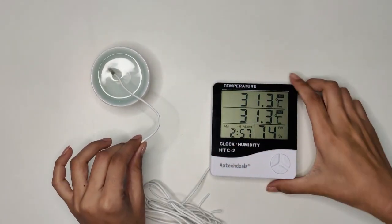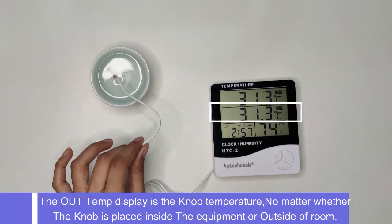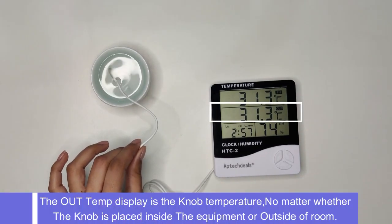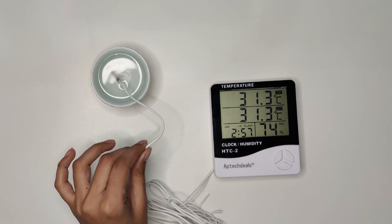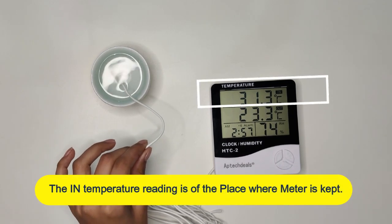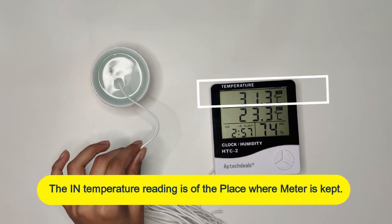The OUT temp display is the knob temperature, no matter whether the knob is placed inside the equipment or outside the room. The IN temperature reading is of the place where the meter is kept.